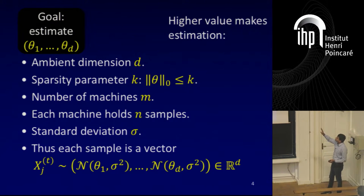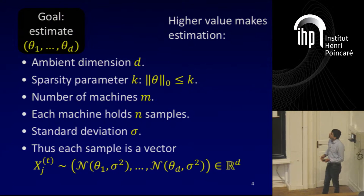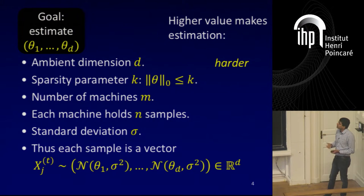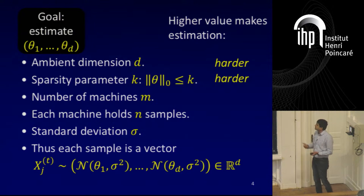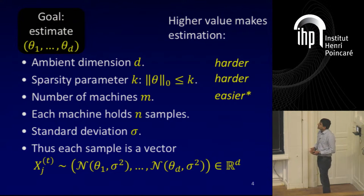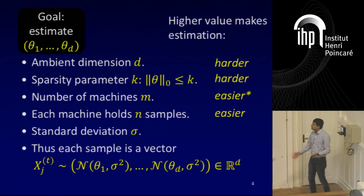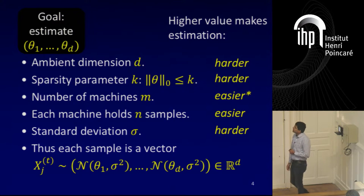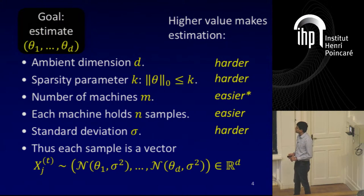Since there are so many parameters, let me explain what higher values mean for the problem. If you increase the ambient dimension d, it makes the job harder — it is a higher-dimensional problem. If you increase the sparsity parameter k, the mean is not so sparse, so it again makes the problem harder. If you increase the number of machines, this makes the problem easier because you have access to more data. If you increase the number of samples each machine holds, it again makes the problem easier. If you increase the standard deviation sigma, this makes the problem harder because the distributions are more spread out and it is harder to estimate the mean.